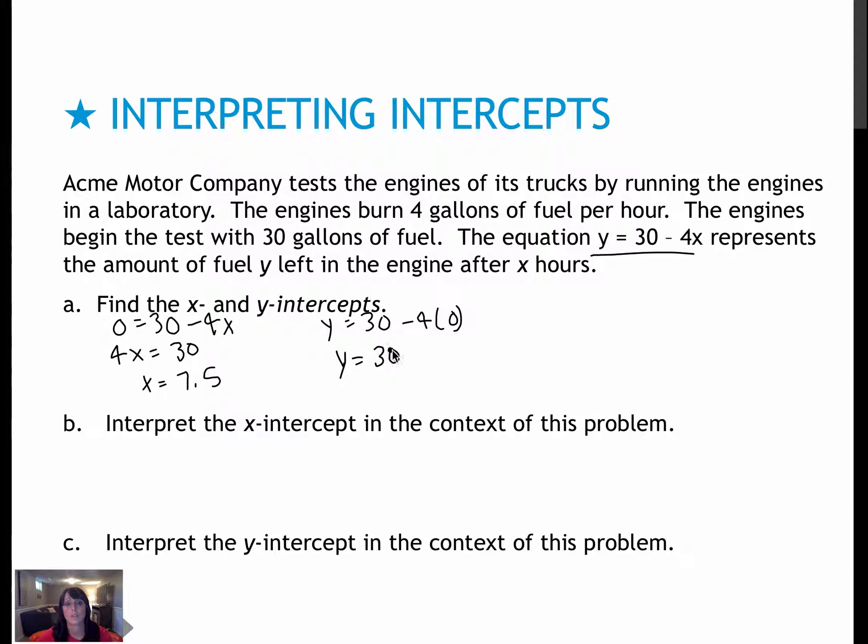And I would plug a 0 in for x and solve. So my x-intercept would be (7.5, 0), and my y-intercept would be (0, 30), so two different points.